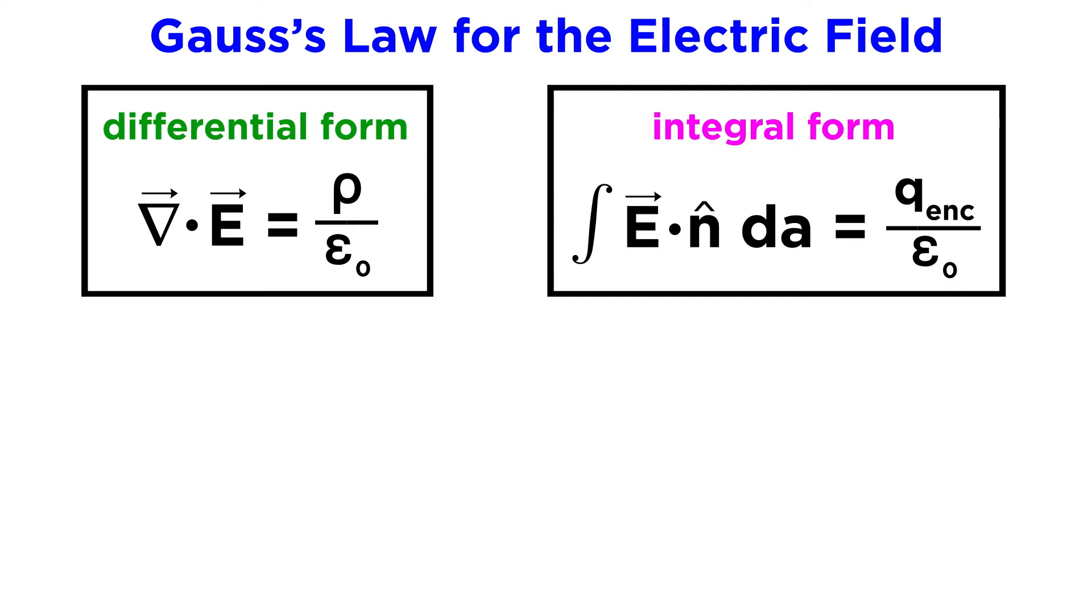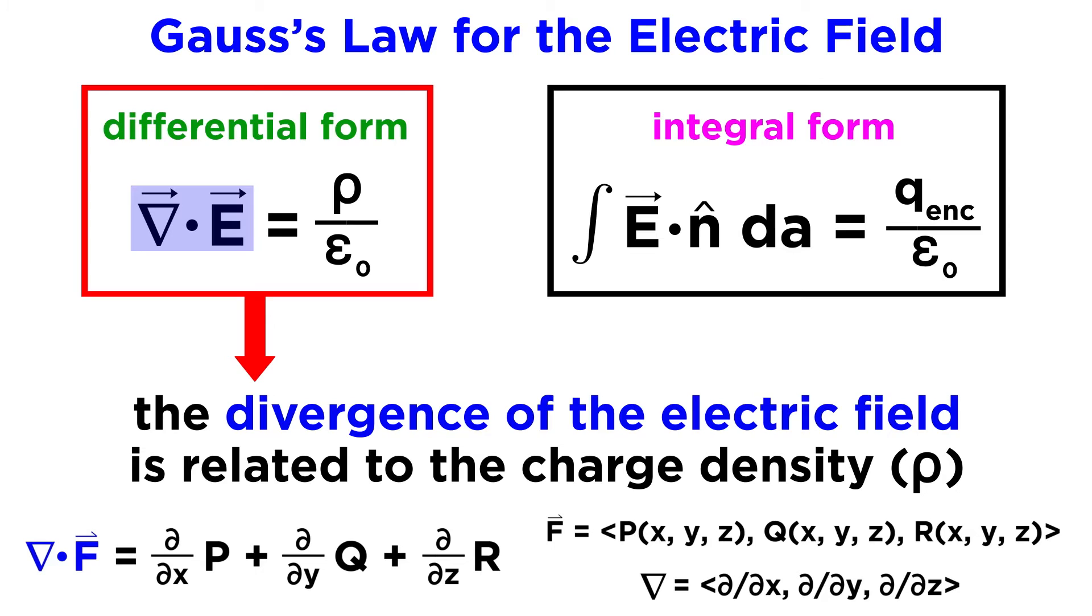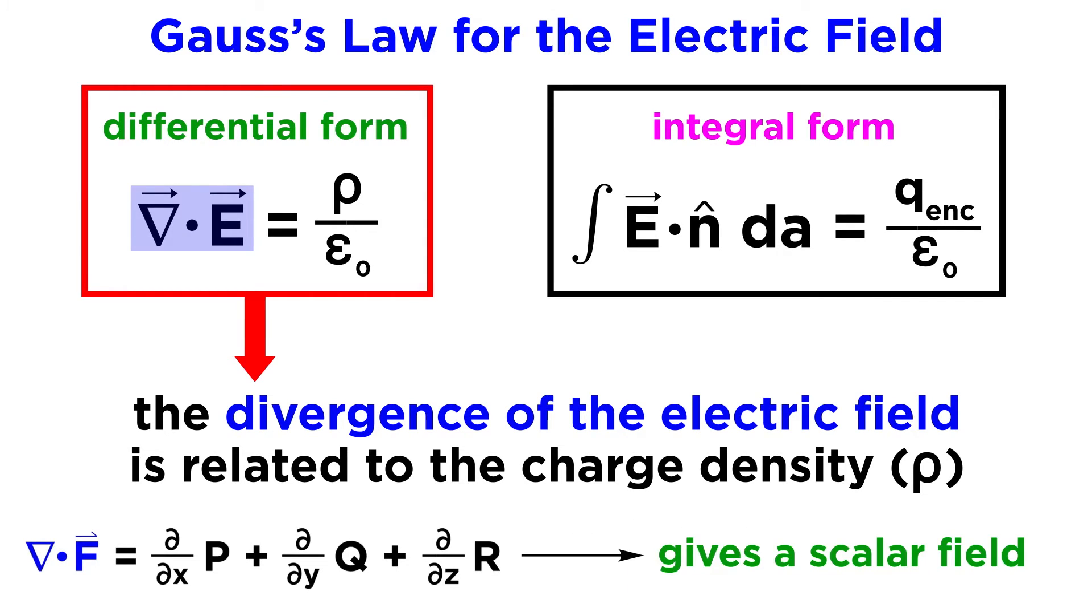As we mentioned, this law has both differential and integral forms. These two forms are useful in entirely separate situations. The differential form states that the divergence of the electric field in a given region is related to the charge density within that region. Remember that divergence means we are finding this dot product, where the del operator is a vector comprised of the relevant partial differential operators, and that the divergence of a vector field, like this electric field, gives us a scalar field.